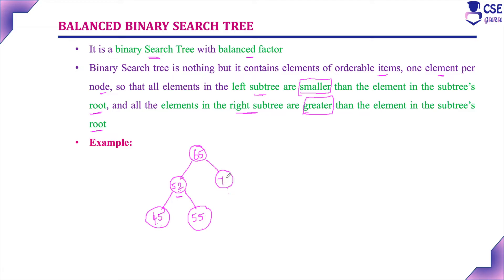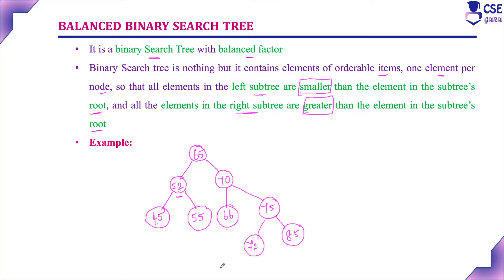Above 65 it is 70. Less than 70, for example 66, will occupy the left subtree, and 75 will occupy the right subtree. Considering less than 75, 72 will occupy the left subtree and 85 will occupy the right subtree. Likewise, in every node, the left subtree should have a smaller element compared to the root element and the right subtree should have a greater element. This is nothing but a binary search tree.